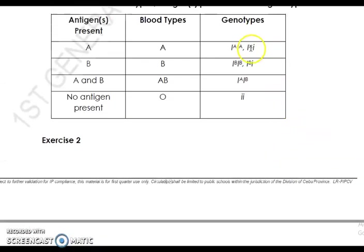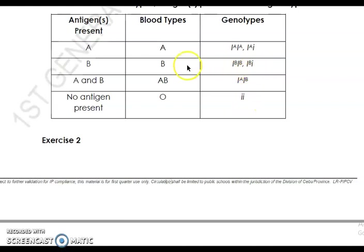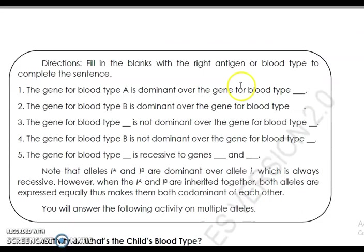That is why in the table, you have IA i as a genotype but the blood type is still A — because O (small i) is recessive to A. Similarly, for blood type B, you can have genotype IB i, but the blood type is still B, because B is dominant over O.